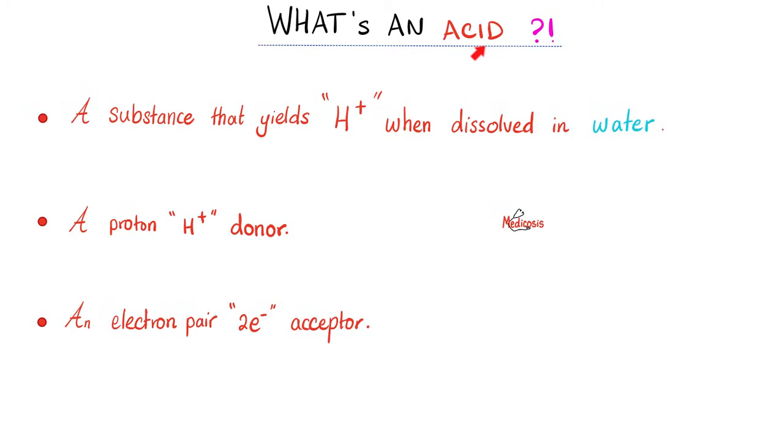So what's an acid? We have three definitions. It's any substance that yields protons when dissolved in water. A better definition is, well, since the protons will go to the water, H plus plus H2O will give me H3O plus. This is called a proton. This is called a hydronium. So an acid is a substance that releases proton or hydronium ion in water. What else? An acid is a proton donor. And it's also an electron pair acceptor. I donate the positive and accept the negative.